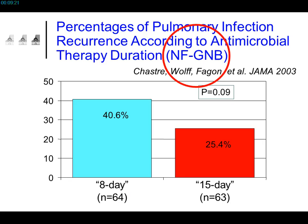In our study on ventilator-acquired pneumonias, for patients infected by non-fermenting gram-negative bacteria — mostly Pseudomonas aeruginosa — we observed a higher percentage of infectious relapse.